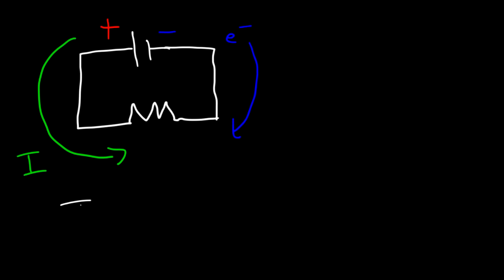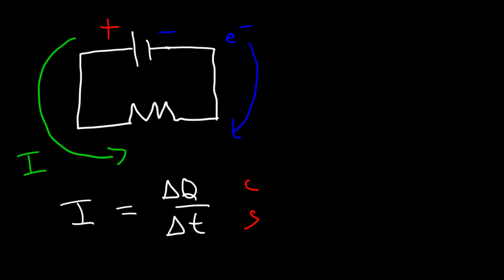Now let's talk about current. Conventional current is the flow of positive charge. Current is defined as the rate of charge flow — it's charge divided by time, or delta Q over delta T. Q is the electric charge measured in coulombs, and T is the time in seconds. The unit for current is the amp, so one amp is equal to one coulomb per second.